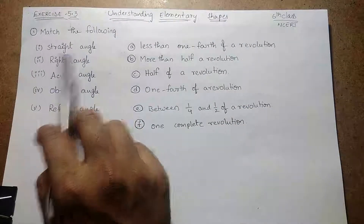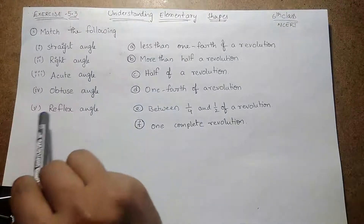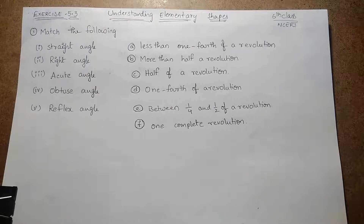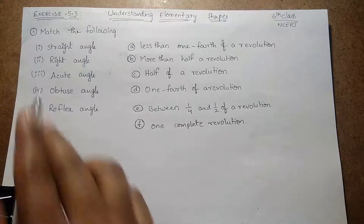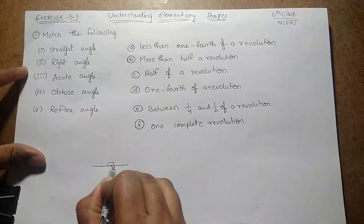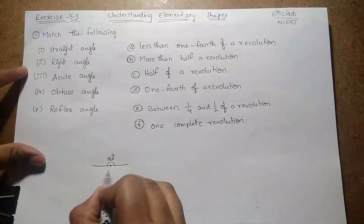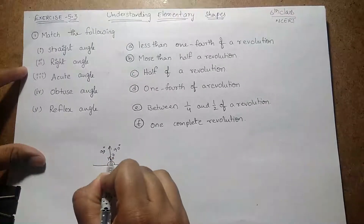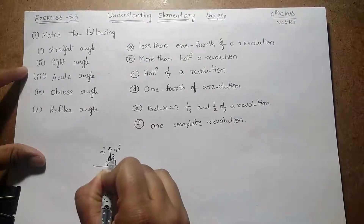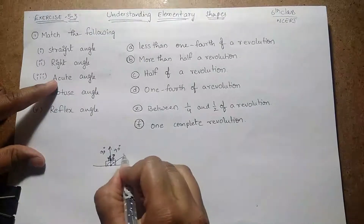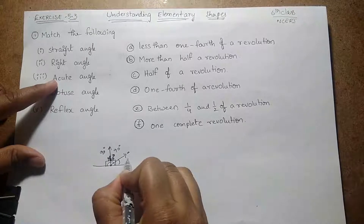Here we have straight angle, right angle, acute angle, obtuse angle, and reflex angle. We already know about angles from earlier classes, so I am explaining briefly. A straight angle is nothing but a straight line at a point — we get 180 degrees. A right angle is 90 degrees. Acute angle is less than 90 degrees.